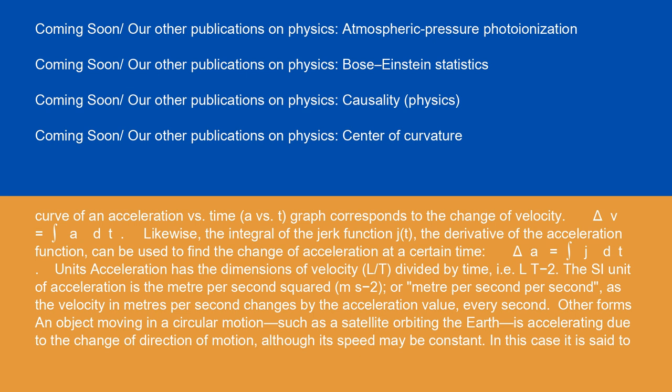Acceleration has the dimensions of velocity (L/T) divided by time, i.e., L·T⁻². The SI unit of acceleration is the meter per second squared (m·s⁻²), or meter per second per second, as the velocity in meters per second changes by the acceleration value every second.